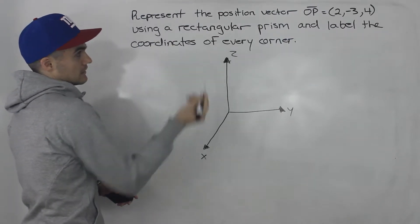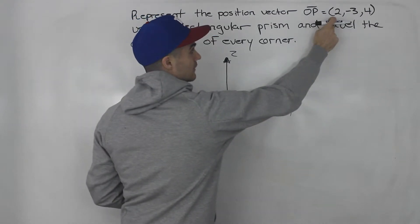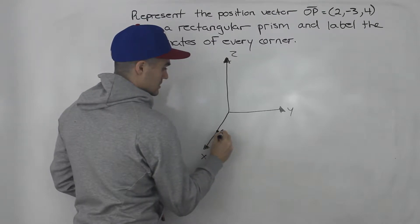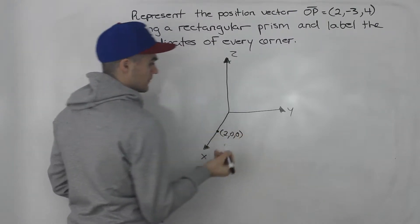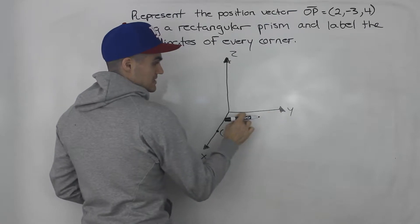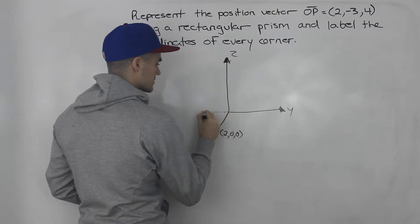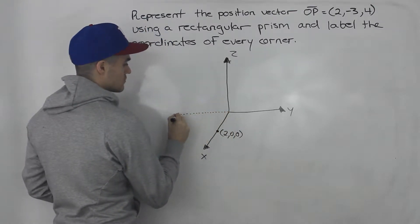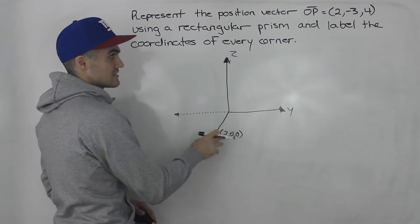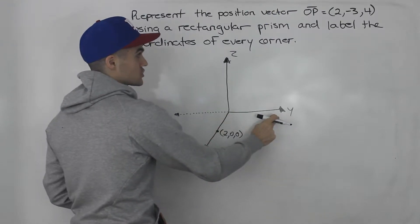When I get a vector like this, the first thing I like to do is plot the points on the axes. The x value is 2, so we know an x value of 2 is over here — so this is (2, 0, 0). The y value is negative 3. This here represents the positive y, so since the y value is negative, you want to extend that y-axis into the negative region. I always only extend these axes if I have to.